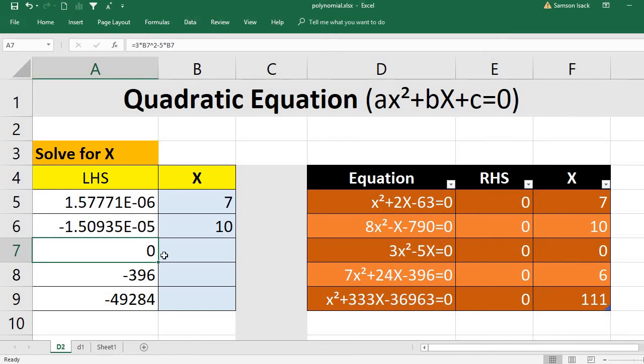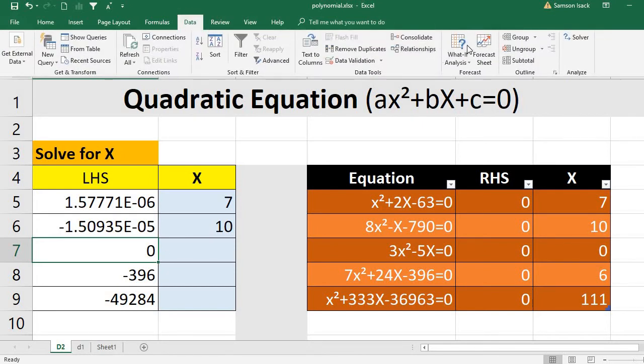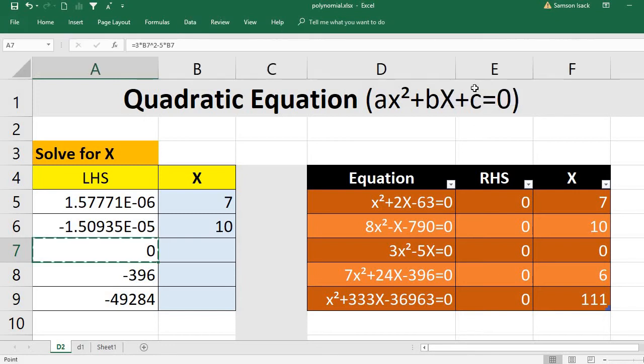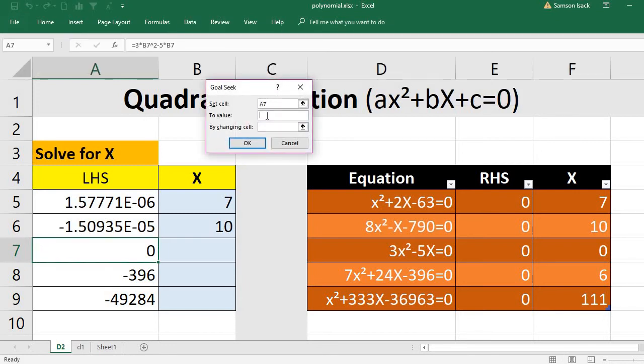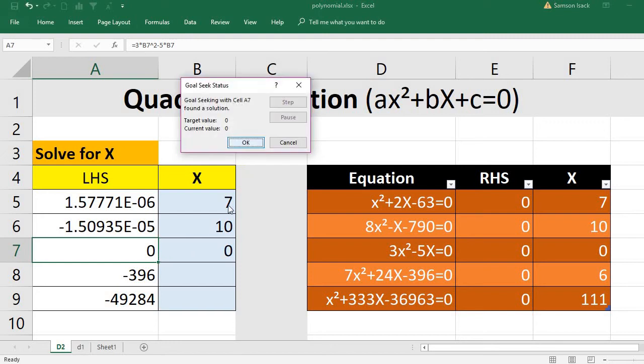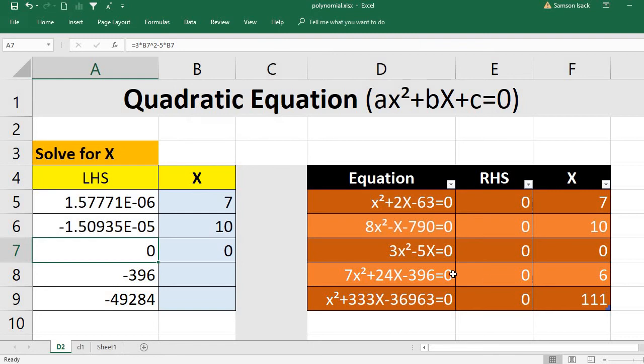So what I do is I just make this one as a positive value for the goal seek to start with the positive value to arrive at the positive value. I am trying to set this 0 by changing variable x. See, this is 10. There could be two values that can satisfy the same equation because we have minus b plus or minus.